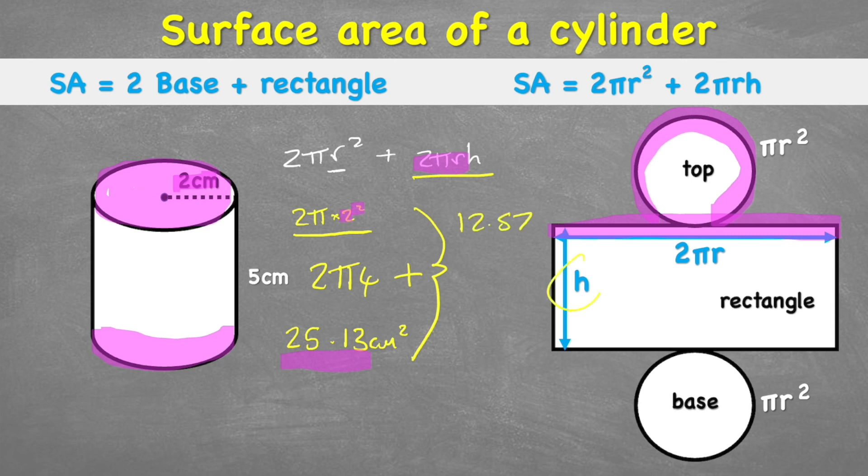But then I'm going to multiply that by the height to get the area. So 12.57 times the height, which in this case is 5 centimeters, gives me an answer of 62.83 centimeters squared. Great,